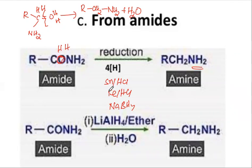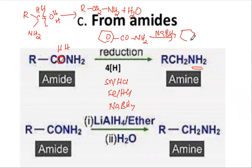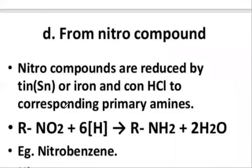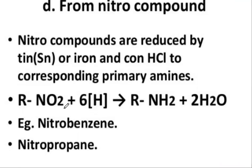Both aliphatic amides and aromatic amides can be reduced this way. Taking an aromatic amide with C-O-NH2 and using sodium borohydride or lithium aluminium hydride, we get the corresponding amine — the oxygen atom is replaced with hydrogen. The next method is reduction of nitro compounds.